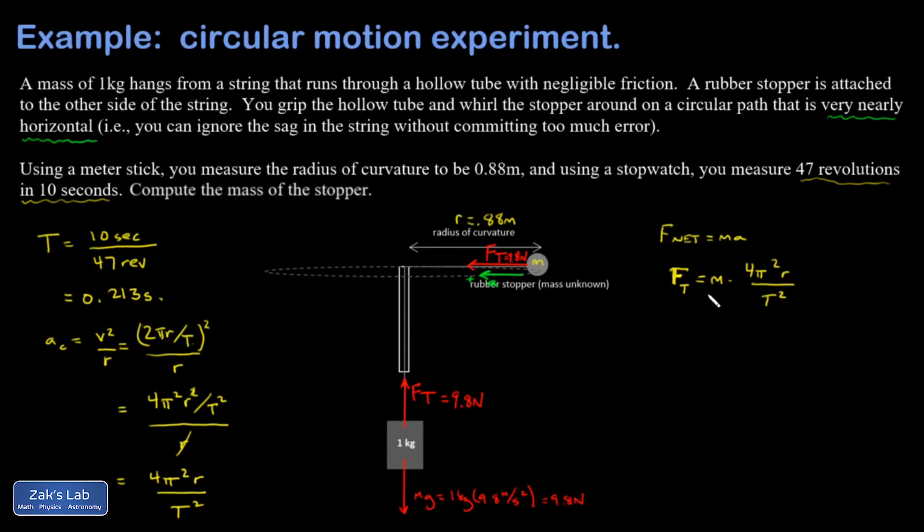I'm going to solve for the mass of that rubber stopper. I end up with M equals F sub T times period squared, all divided by 4π times the radius of curvature. I'm ready to plug things in. I have 9.8 newtons for the tension, 0.213 seconds for the period, and my radius of curvature was 0.88 meters. I get 0.0128 kilograms for the mass. It's probably more appropriate to express in grams, so that's 12.8 grams.